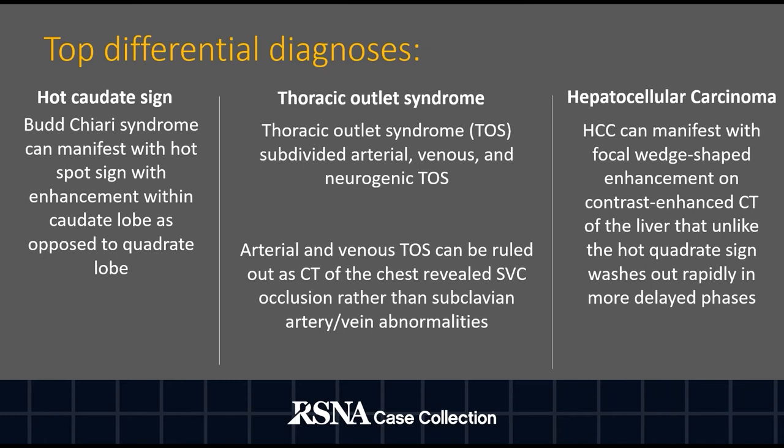Neurogenic thoracic outlet syndrome requires neurological symptoms, which are not present in this patient. Hepatocellular carcinoma can manifest with similar focal wedge-shaped enhancement on contrast-enhanced CT of the liver that, unlike the hot quadrate sign, washes out rapidly in more delayed phases.